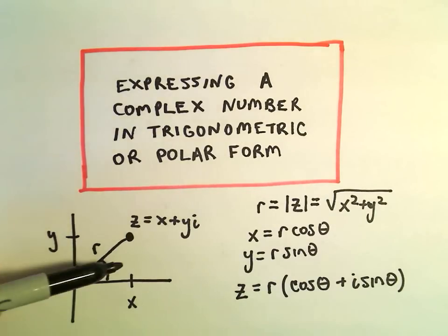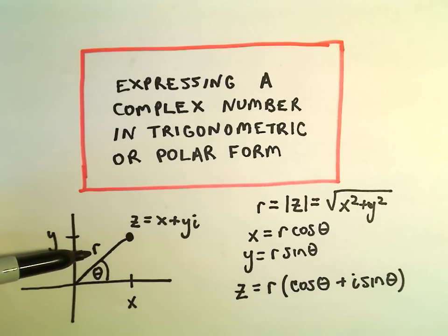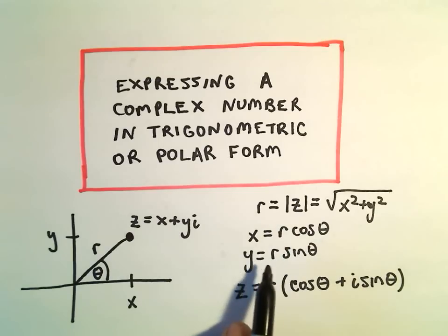We could come up with some relationships. We could do cosine, so cosine of theta would be adjacent x over the hypotenuse, which is r. If you solve that for x, we'll get x equals r cosine theta. The same way, we could solve for y and get y equals r sine theta.